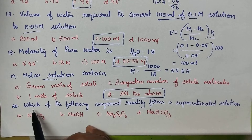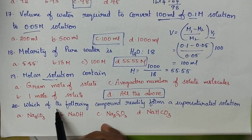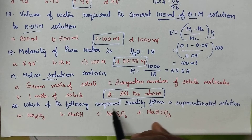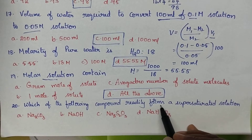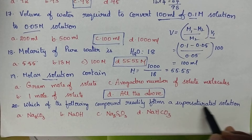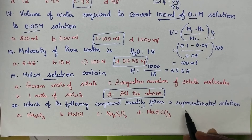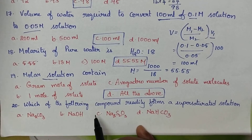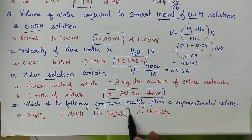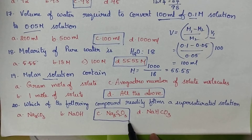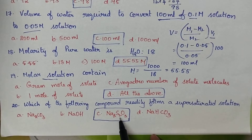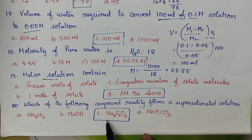Which of the following compounds readily forms a supersaturated solution? In general, hypo (Na₂S₂O₃) readily forms a supersaturated solution. Option C is the right answer.